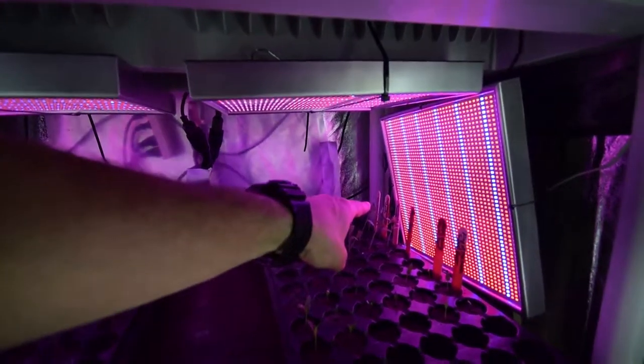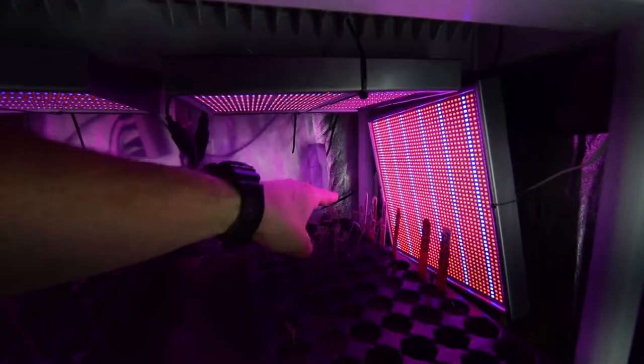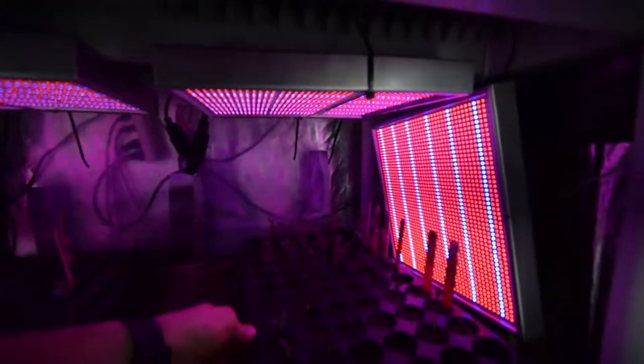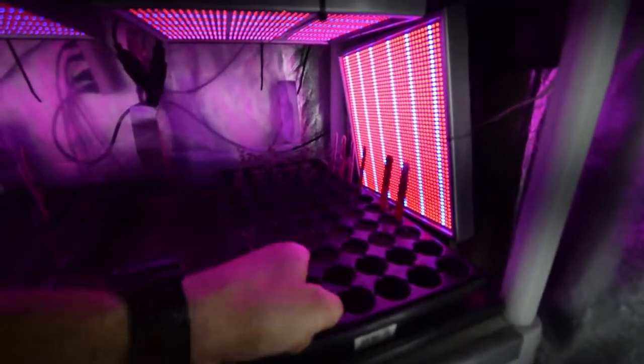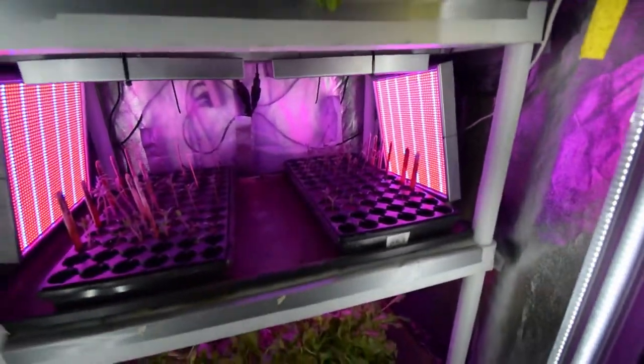Those are the supernova cherry tomatoes. The Cosmonaut Volkov tomato, which is a bigger tomato. Looks like we got really good growth on those. The Montesinos are all up. Those look nice. And then we got our peppers here. So I'm happy to see we got more of the peppers up. Everything looks good there.